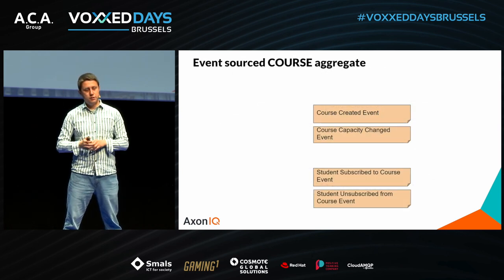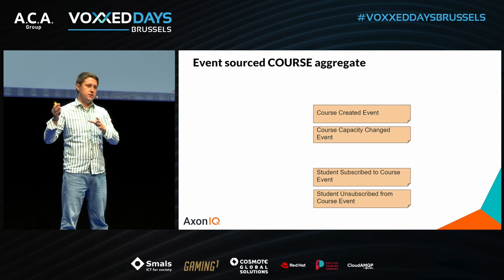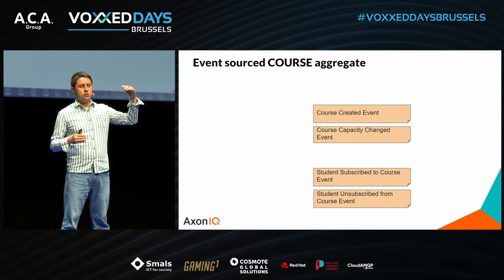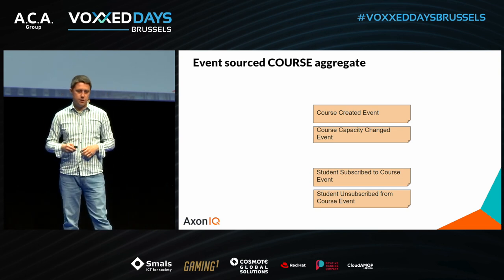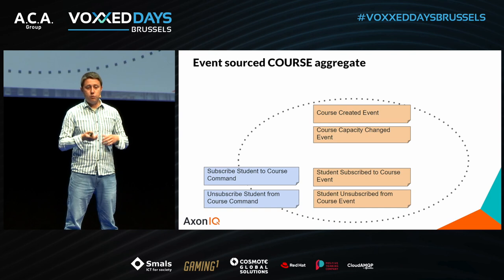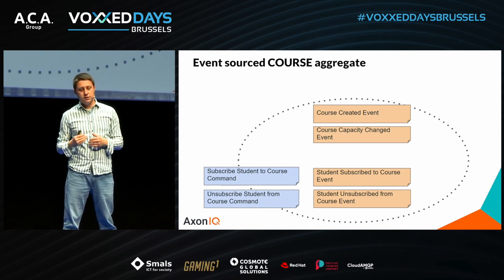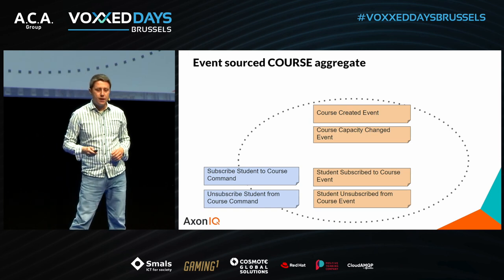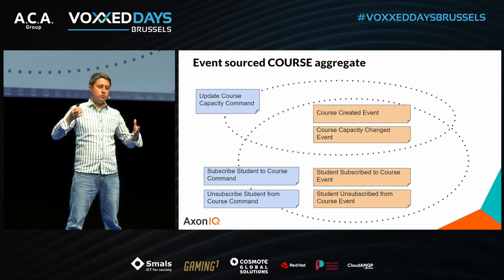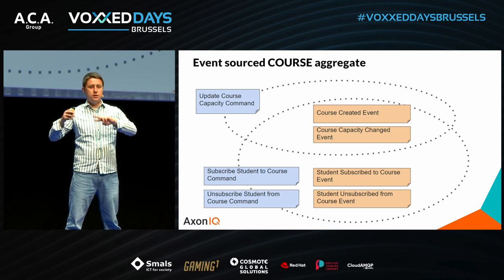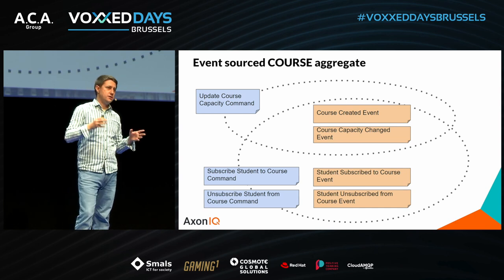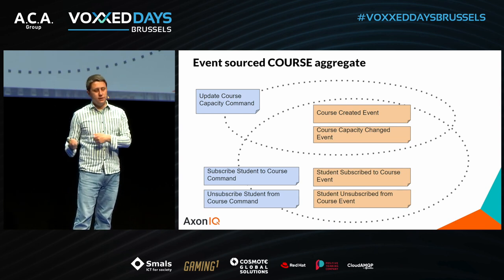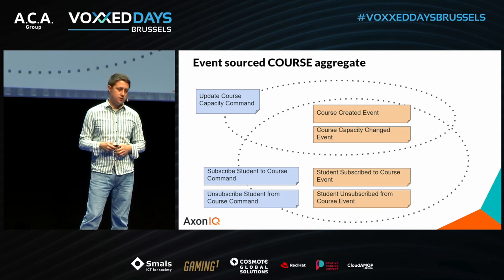In the event-sourced world, we store a series of events published by the aggregate. When handling subscription and unsubscription we load all events — necessary in that case. But when handling update-course-capacity, we only need two events: course-created and capacity-changed. We do not need anything else, yet we are going to load everything because this is our consistency boundary.